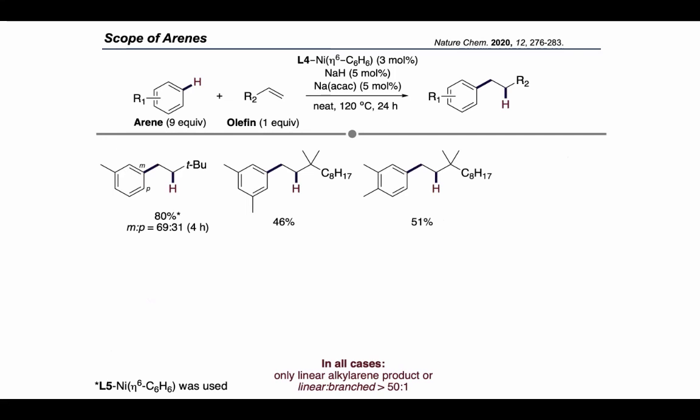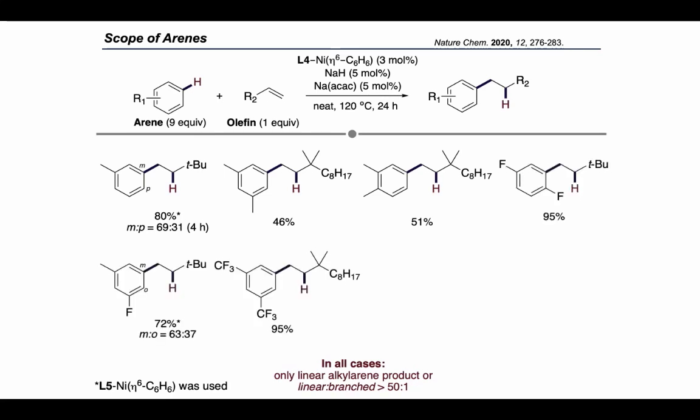In terms of electron-neutral arenes, benzene, toluene, and xylene isomers all react well to form the hydroarylation product at the most sterically accessible position on the aromatic ring. Other more electron-rich arenes such as anisole were not reactive under these conditions in high yields, but electron-poor arenes with fluorinated groups did give the hydroarylation product in high yields. Additionally, we've been able to develop one example of an intramolecular hydroarylation reaction with an arene substrate that possesses a pendant alkene.